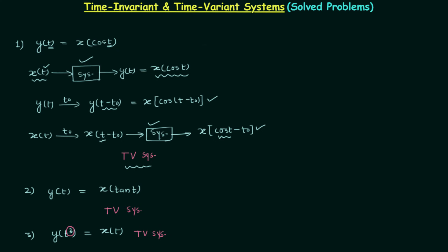For example, in the third problem, if we have y(t³) = x(t), the system is also time variant because there is an operation on the time variable which is a scaling operation, not a shifting operation. In the fourth problem, y(t) = x(t²) — again there is time scaling on the input side, so the system is time varying.